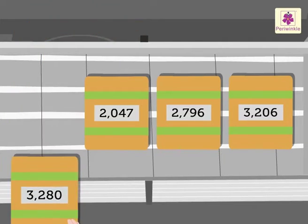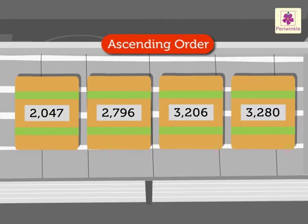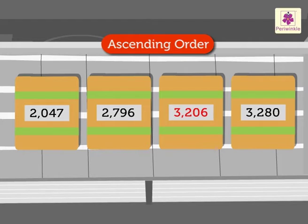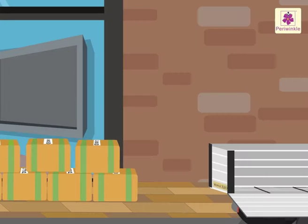Let us rearrange the boxes in the ascending order. First comes two thousand forty seven, then two thousand seven hundred ninety six, then three thousand two hundred six, and last, three thousand two hundred eighty.